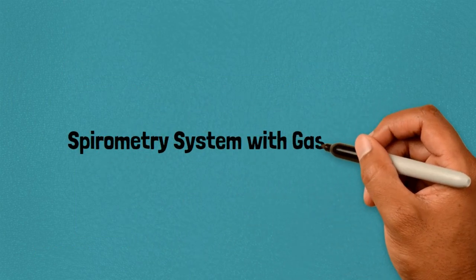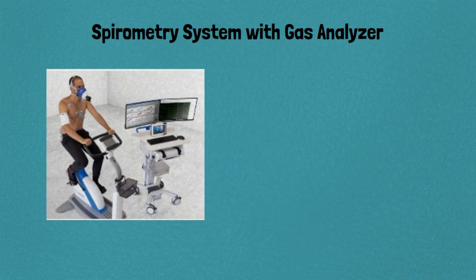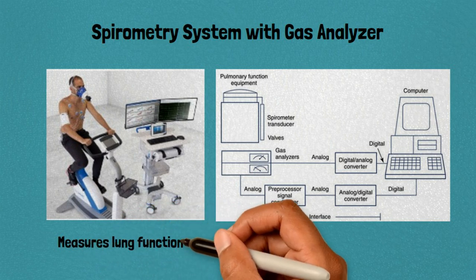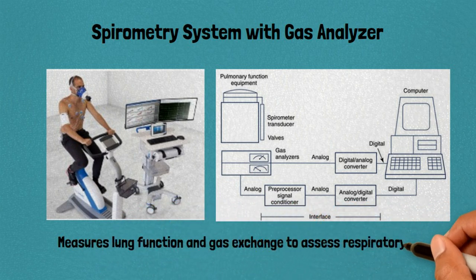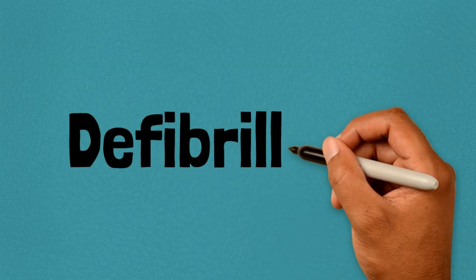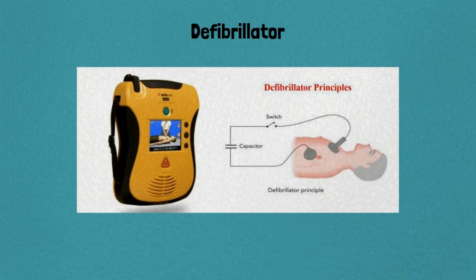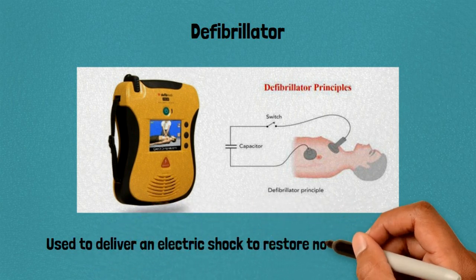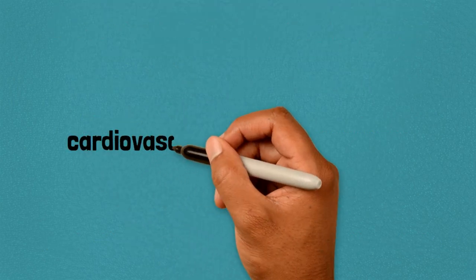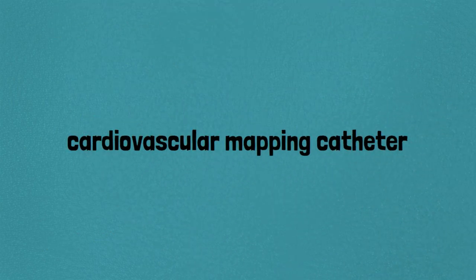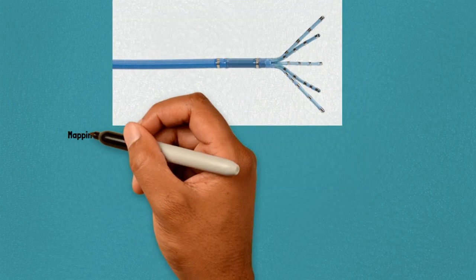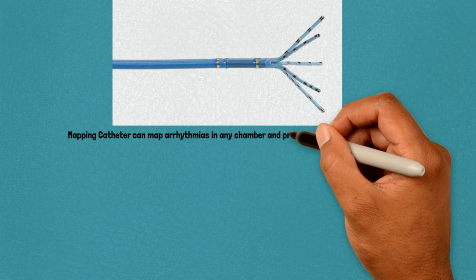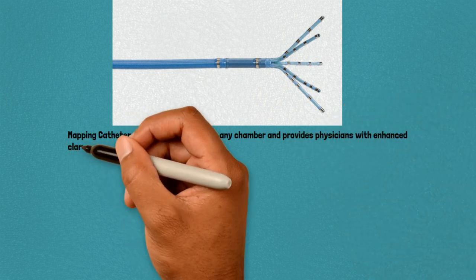48. Spirometry system with gas analyzer: measures lung function and gas exchange to assess respiratory health. 49. Defibrillator: restores normal heart rhythm by delivering an electric shock in cases of cardiac arrest or arrhythmias. 50. Cardiovascular mapping catheter: used to map electrical activity inside the heart so that the physician can use an ablation catheter precisely during heart ablation procedures.